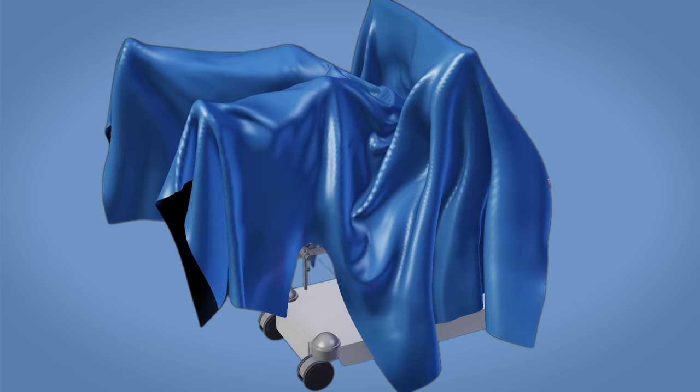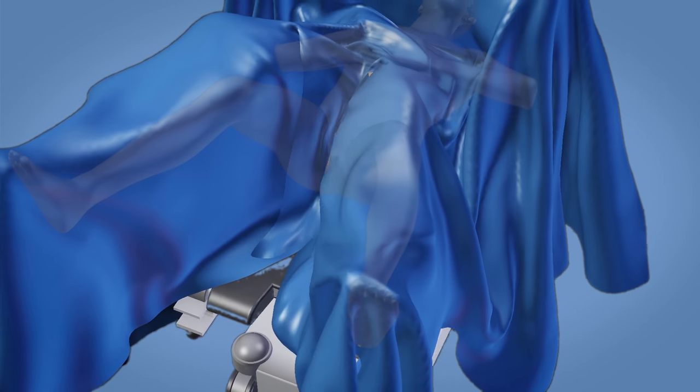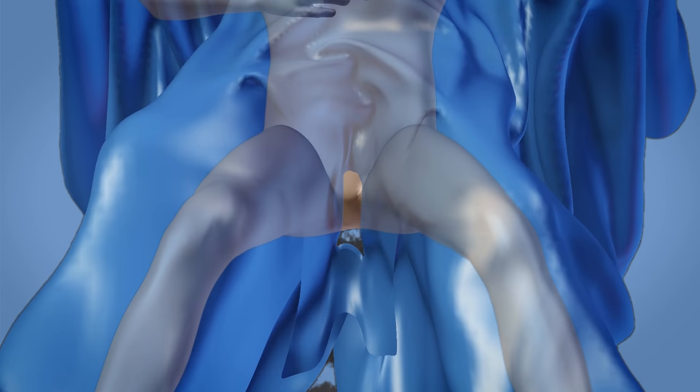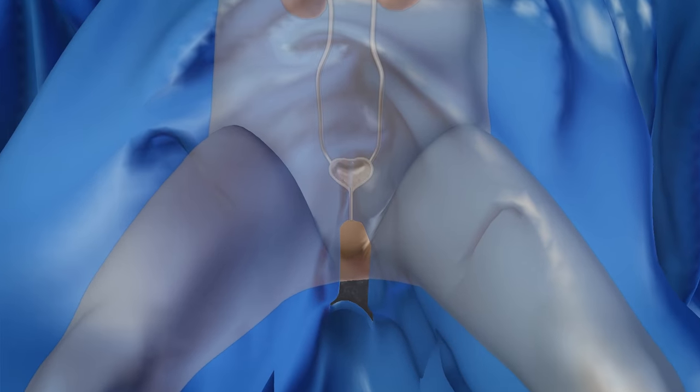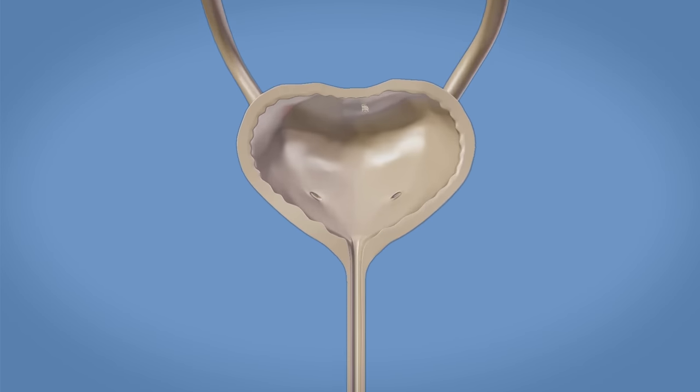Before the surgery, you are either given a general anesthetic, which puts you to sleep, or a regional anesthesia, which numbs the lower part of your body. The surgery will begin shortly after the anesthesia starts to work.